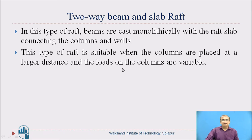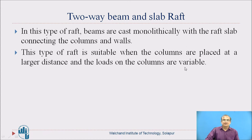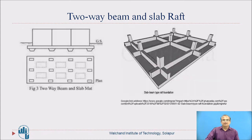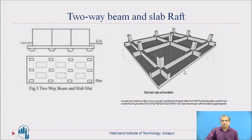The next type is two-way beam and slab raft. In this type of raft foundation, beams are cast monolithically with the slab connecting columns and walls. Load from the column comes to the beams, and the beams transfer the load to the slab below. This is the two-way beam and slab raft type of foundation.